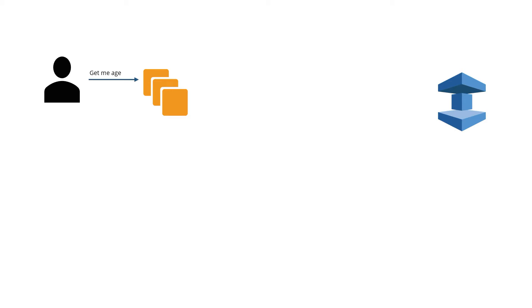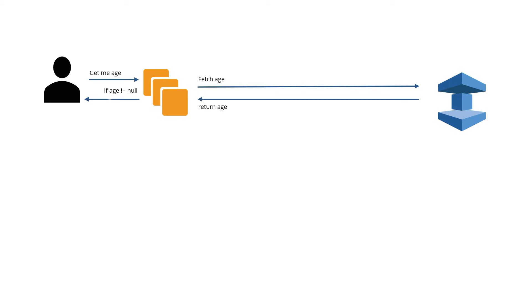Let us try to see this example. Here we have three entities: the user, the EC2 instance where your application is hosted, and ElastiCache. When the user requests any page in your web browser, it goes to the EC2 instance and then it first checks the ElastiCache. Let's assume the user is trying to get the age, and this age is a parameter which has been frequently accessed. So the architect has decided to save this age in the ElastiCache memory. Whenever the user fetches the age, it first goes to the cache memory, gets the age, and then renders it to the user.